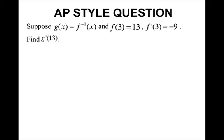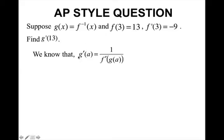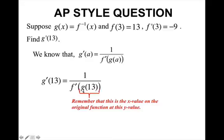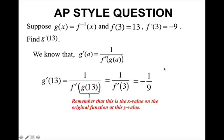On the AP test, you'll see questions like this: suppose g(x) = f⁻¹(x), f(3) = 13, and f′(3) = −9. Find g′(13). We need g′(13), which requires g(13) — the x value on the original function corresponding to y = 13. Since f(3) = 13, the x value on f is 3. So we need f′(3), which is −9. Therefore g′(13) = 1/(−9) = −1/9.